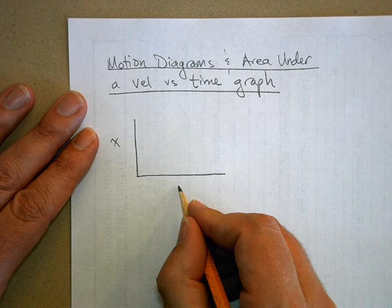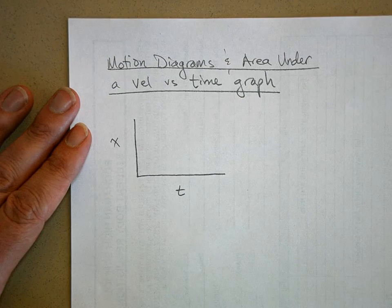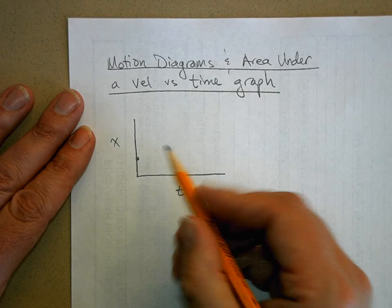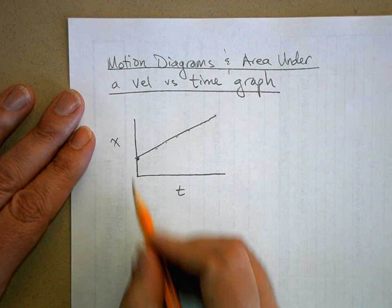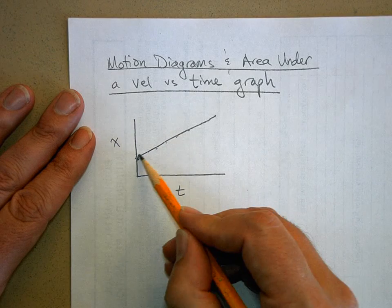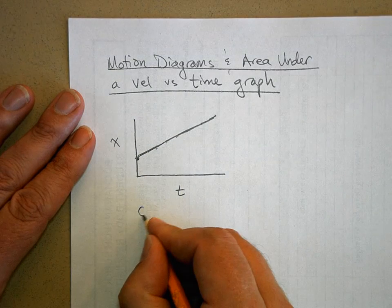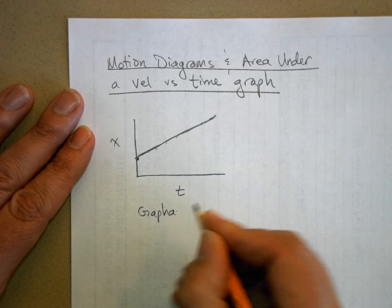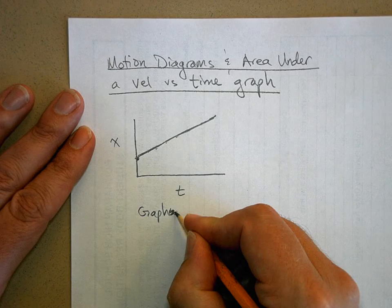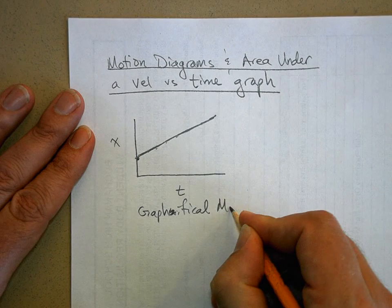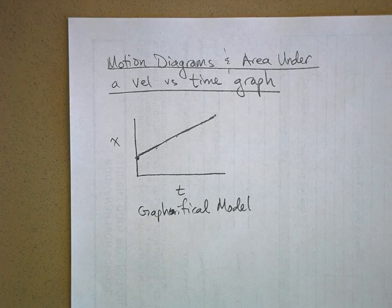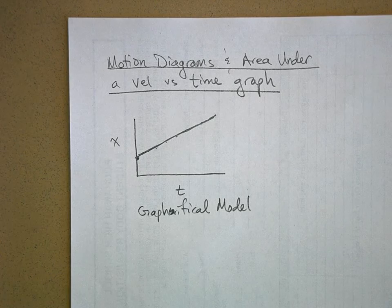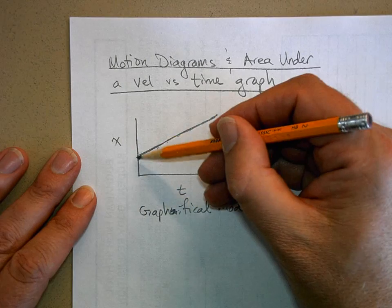Here's position as a function of time. Here's my starting position, and then you graph it — as you move away from the origin at a constant velocity, you have a constant slope, so this is a straight line. This is a graphical model of the motion of the object.